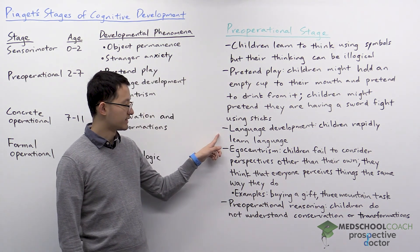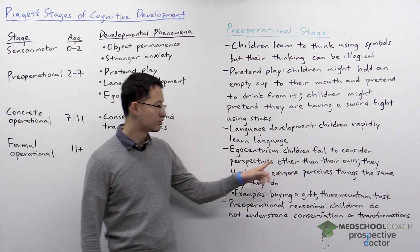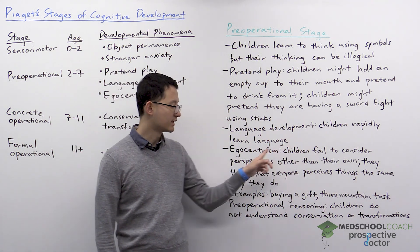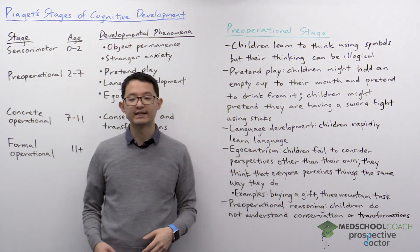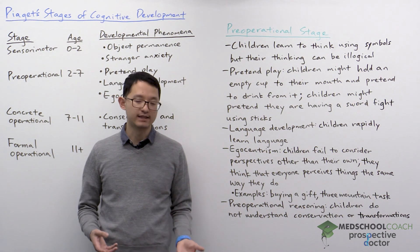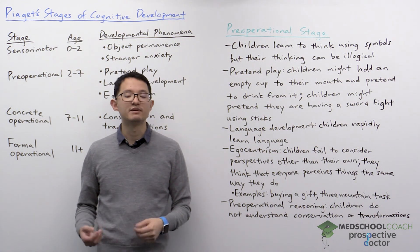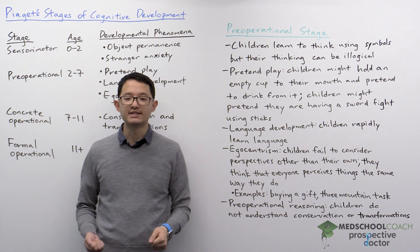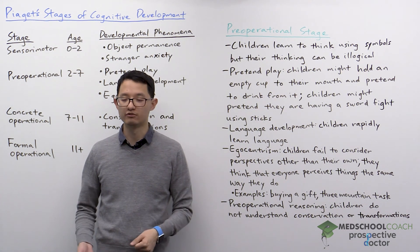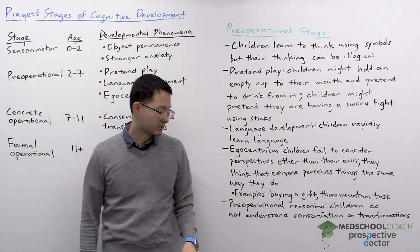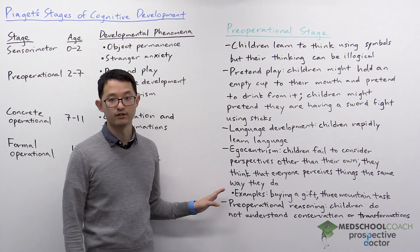Another important development during this stage is language development. Children rapidly learn language. However, just because they can understand and speak the language doesn't mean that they have the same level of reasoning and logic as adults — as we're going to see with the next two points, they don't.